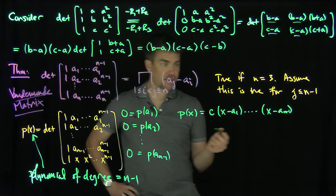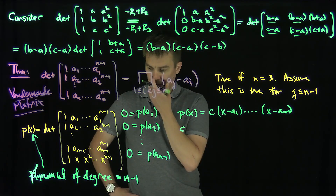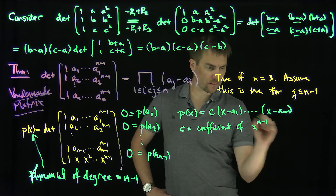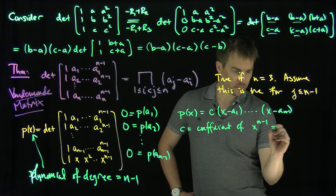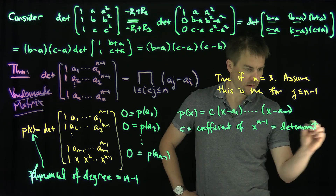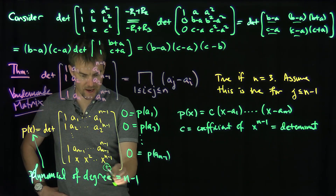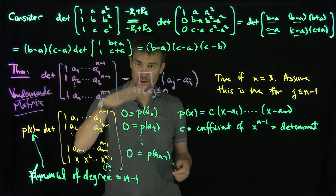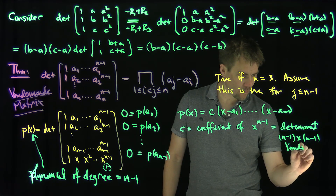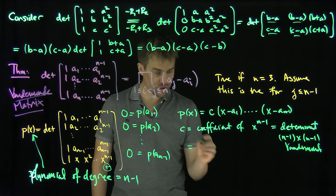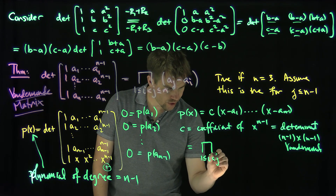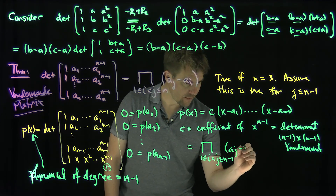The constant c is the leading coefficient of x^(n-1) in p(x). That coefficient comes from expanding the determinant along the last row's x^(n-1) entry — which is in row n and column n — so the cofactor sign is positive (since n plus n = 2n is even). This gives c equal to the determinant of the (n-1) by (n-1) Vandermonde matrix in the top-left block. By the induction hypothesis, that equals the product over 1 ≤ i < j ≤ n-1 of (aⱼ minus aᵢ).